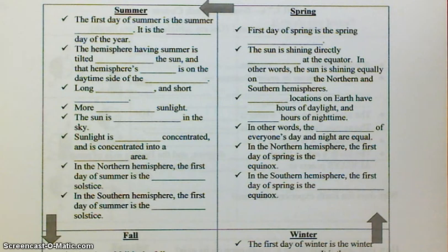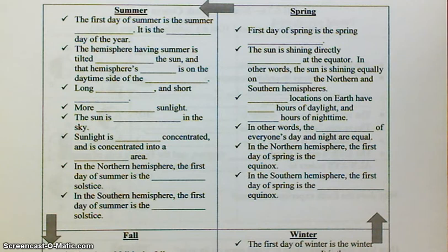This is a screencast for part of RTI for 8.7a over the seasons, and we're going to walk through how to fill in these notes. Some of these you might have a pretty good idea, but let's just go over them.